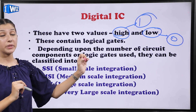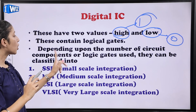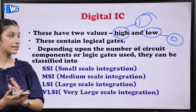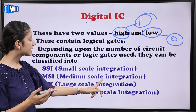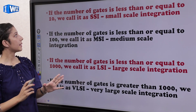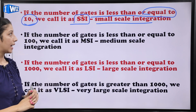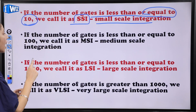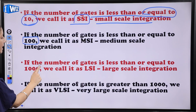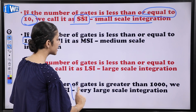Digital ICs have two values — binary values: high corresponding to 1 and low corresponding to 0. These contain logic gates — AND, OR, NOT, etc. Depending upon the number of logic gates used, digital ICs are classified as: Small Scale Integration (SSI) — up to 10 gates; Medium Scale Integration (MSI) — up to 100 gates; Large Scale Integration (LSI) — up to 1000 gates; and Very Large Scale Integration (VLSI) — greater than 1000 gates.